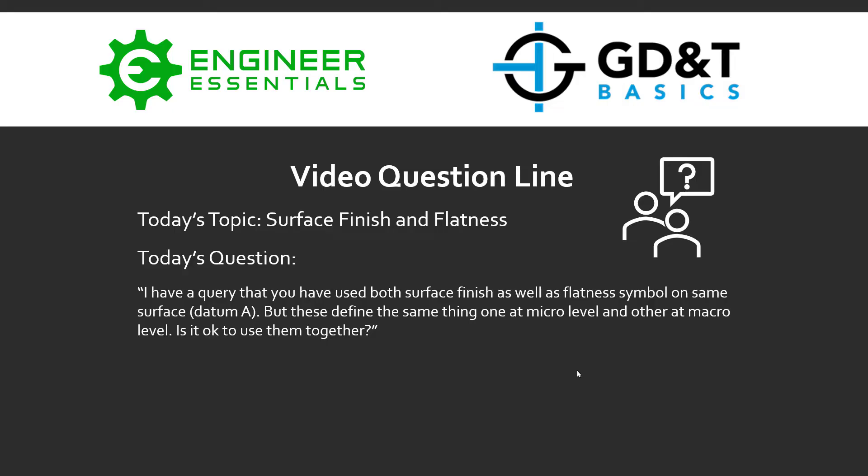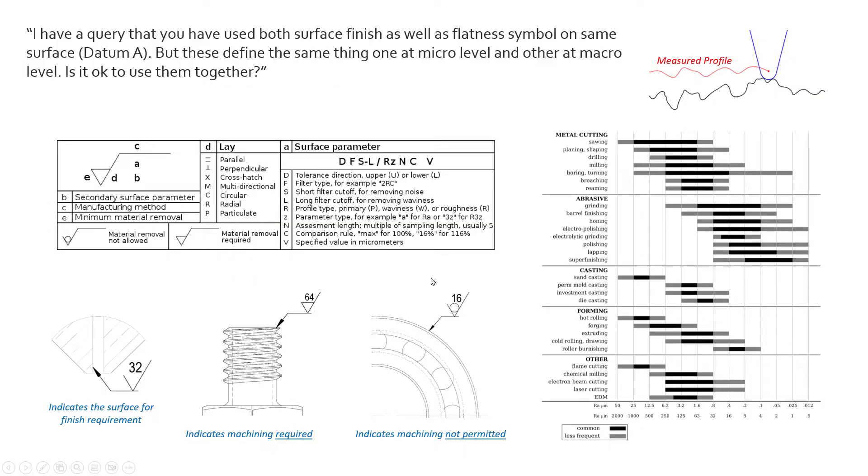Hey everybody, Jason here with GD&T Basics. Today on the video question line we're covering a student's question on surface finish and flatness. The question was: I have a query that you've used both a surface finish as well as a flatness symbol on the same surface, which was a datum. Do these define the same thing — one at a micro level and the other at a macro level? Is it okay to use them together?